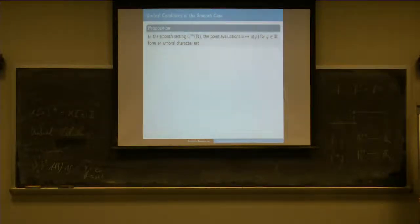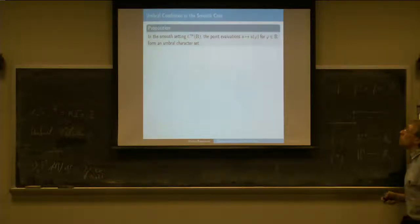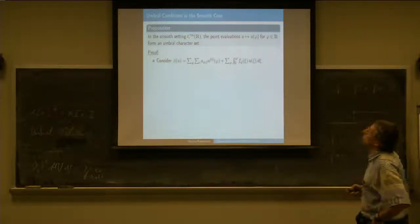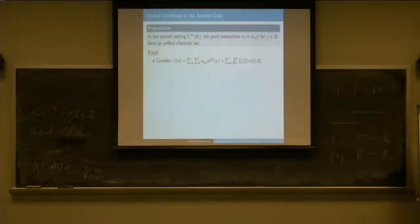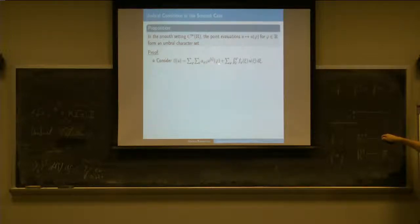In the smooth case, it turns out that if you take all point evaluations—phi is now an arbitrary real number—for every real number I have an evaluation, and if I put them all together, they form an umbral character set. That's the place where I really do a little bit of analysis, but it's only to ensure this condition. If you take an arbitrary Stieltjes condition, it looks like this: a linear combination of local conditions evaluated at various points.